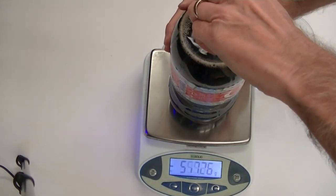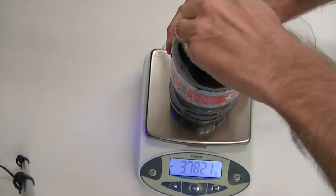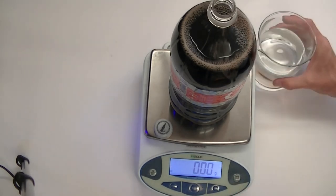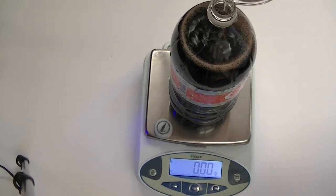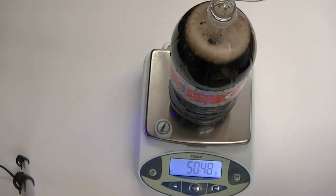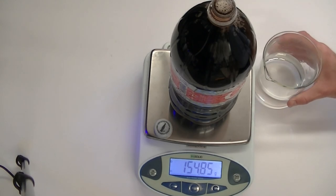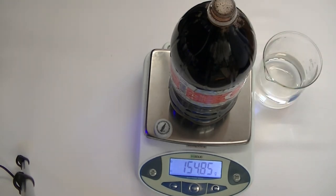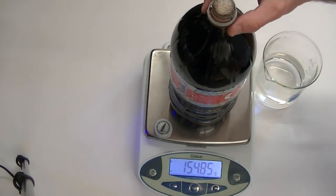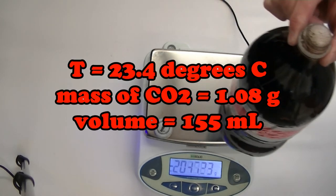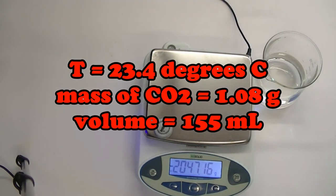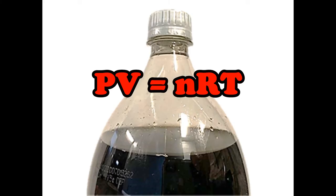Finally, we'll measure the headspace volume. Looks like it's about 155 milliliters. All right, we've got all the data. Now it's your job to find the pressure inside the 2.0 liter soda bottle using the ideal gas law. Leave your answer in the comments when you figure it out.